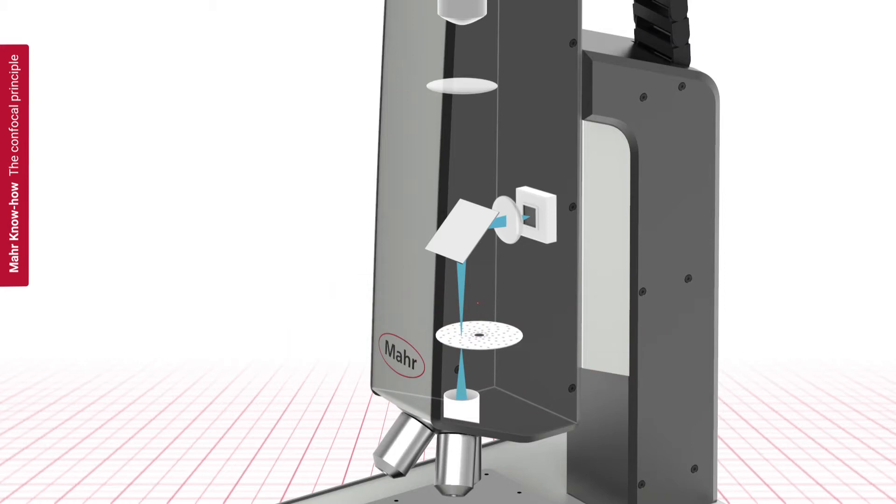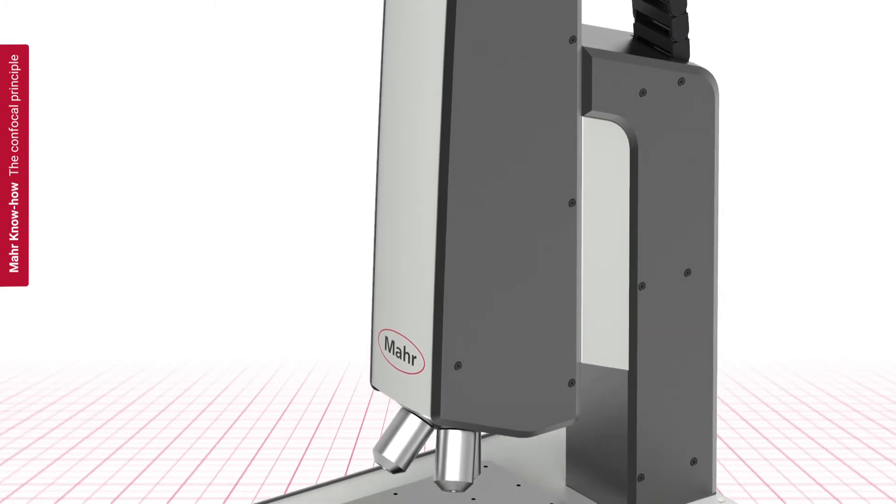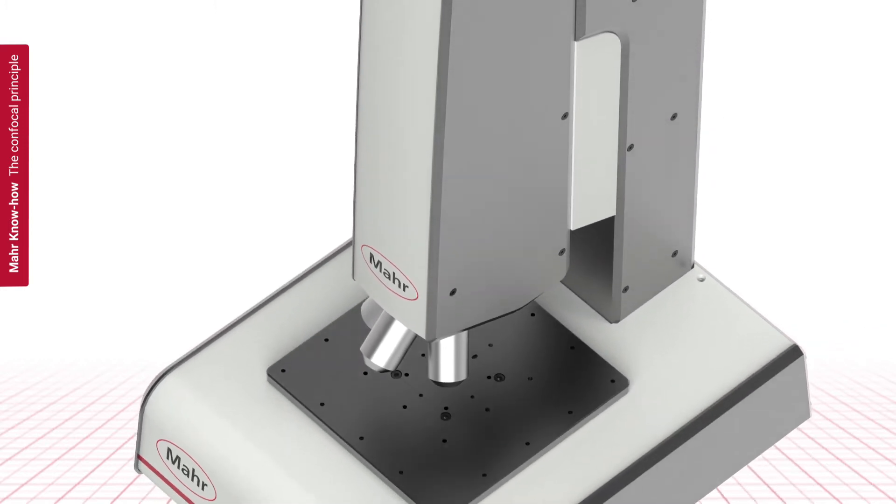In contrast to the point sensor, the light passes through the same pinhole aperture twice – first on the way to the sample surface and then on the way back to the detector.